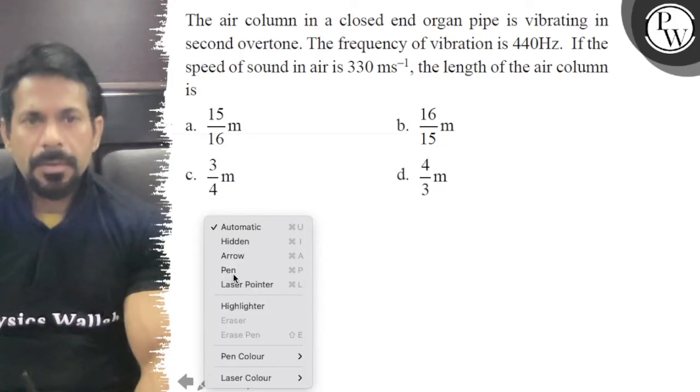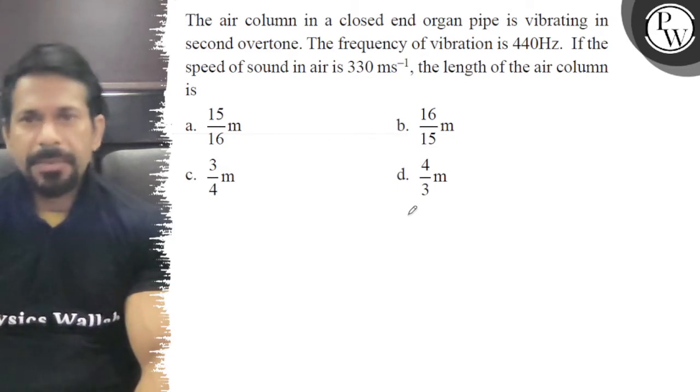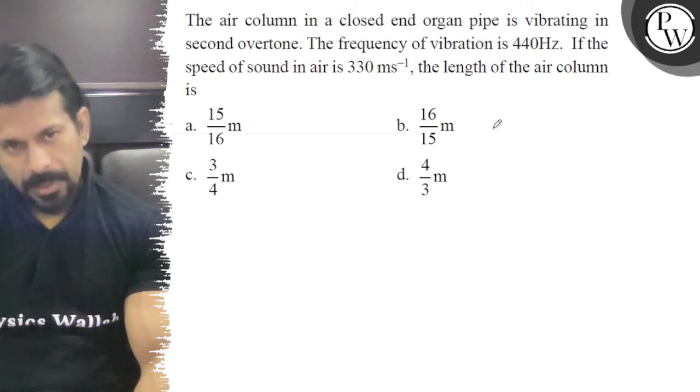Hello, let's see the question. The air column in a closed end organ pipe is vibrating in the second overtone. The frequency of vibration is 440 Hz. If the speed of sound in air is 330 m/s, find the length of the air column.